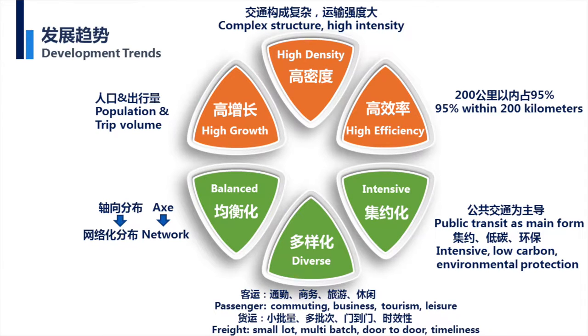The fifth aspect is the diversity of demand on transport. The sixth is about intensive development. This is against China's reality because China has a dense population and a lot of pressure on its cities. So we would not focus on private transport — instead we will pursue a more intensive public transit. That's definitely the trend in the future. These are the six development trends.